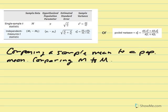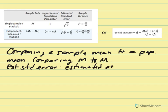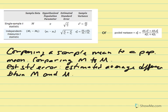Our estimated standard error from the previous chapter represents the estimated average or expected difference between m and mu — what we would expect that difference to equal on average when comparing sample average to population average. Our choice is to determine whether a difference is due to sampling error or statistical significance due to a treatment, or differences in populations such as males versus females, a quasi-independent variable.